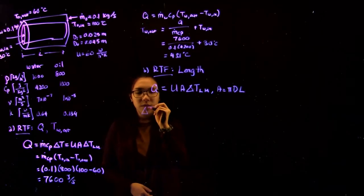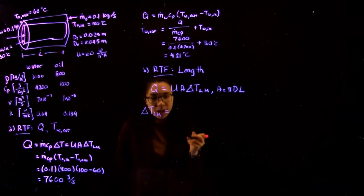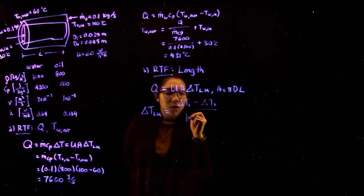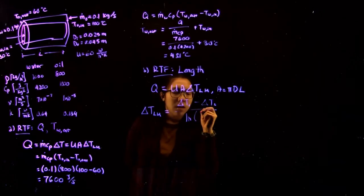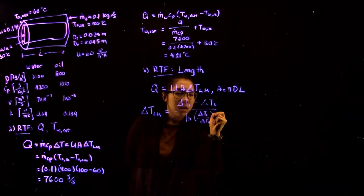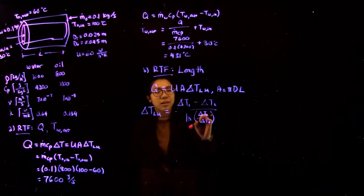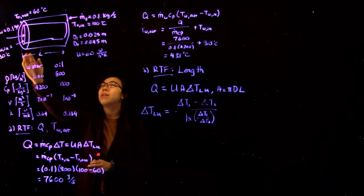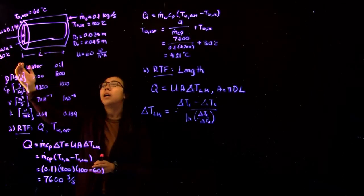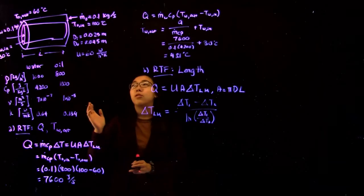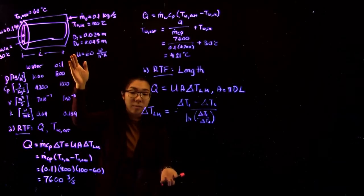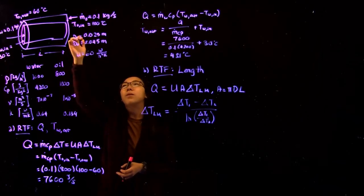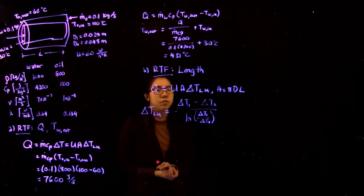So what we want to do is find the log mean temperature, which is equal to delta T1 minus delta T2 over ln of the ratio of these. In this case, delta T1 is whatever the temperature difference is on one side of the exchanger. So in this case, it would be the difference between the oil out and the water in. Delta T2 similarly is the change in temperature or difference in temperature on the other side of the exchanger, which is the difference between the oil in and the water out for counter-current flow.